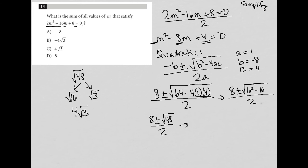So this turns into 8 plus or minus 4 root 3 over 2. I can reduce this further by dividing everything by 2. So 2 goes into 2 once, 2 goes into 8 four times, 2 goes into 4 two times. So what we're left with is 4 plus or minus 2 square root 3.